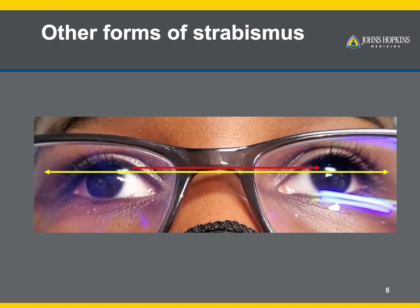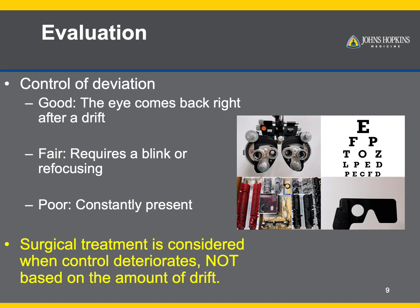Management will depend on the severity of the problem. We typically evaluate the problem by looking at several parameters, such as vision, depth perception, and control of the misalignment. If vision is asymmetric, or if there is an absence of depth perception, treatment is indicated. We also classify control of the deviation based on what is required for the child to bring the eye back in. With good control, the eye comes right back in after it drifts without any blink or any stimulation. Fair control means that the child needs to blink or someone needs to stimulate the child in order for the eyes to straighten. And poor control means that the eye is drifting even with stimulation.